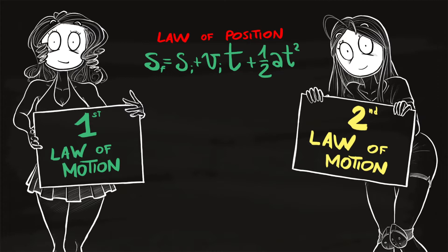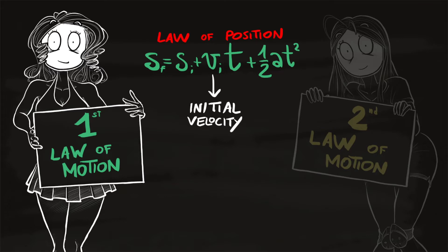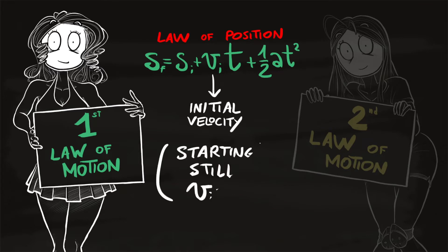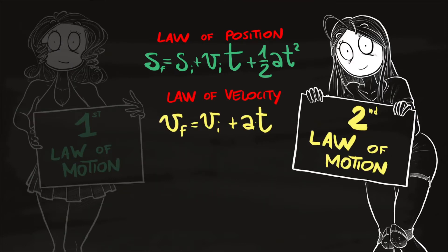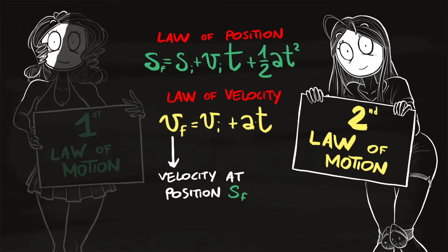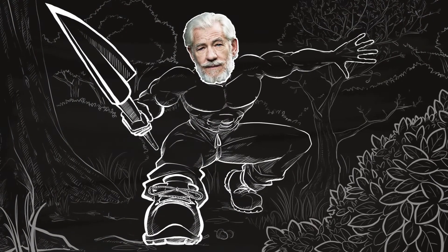In uniformly accelerated motion you have two laws of motion. The first is about position: final position sf equals initial position si plus initial velocity vi times t plus one-half times acceleration times t squared. Watch out: vi is the initial velocity — if you start still, vi is zero. The second law: velocity at time t equals initial velocity plus a times t. Here, vf is the velocity at the final time tf. These two equations are always used together.